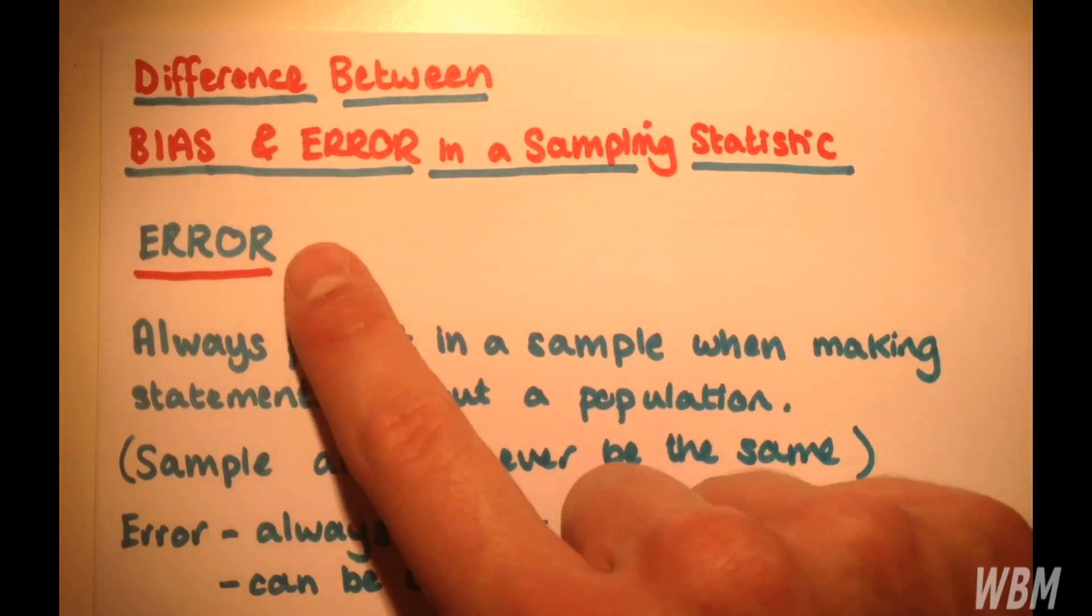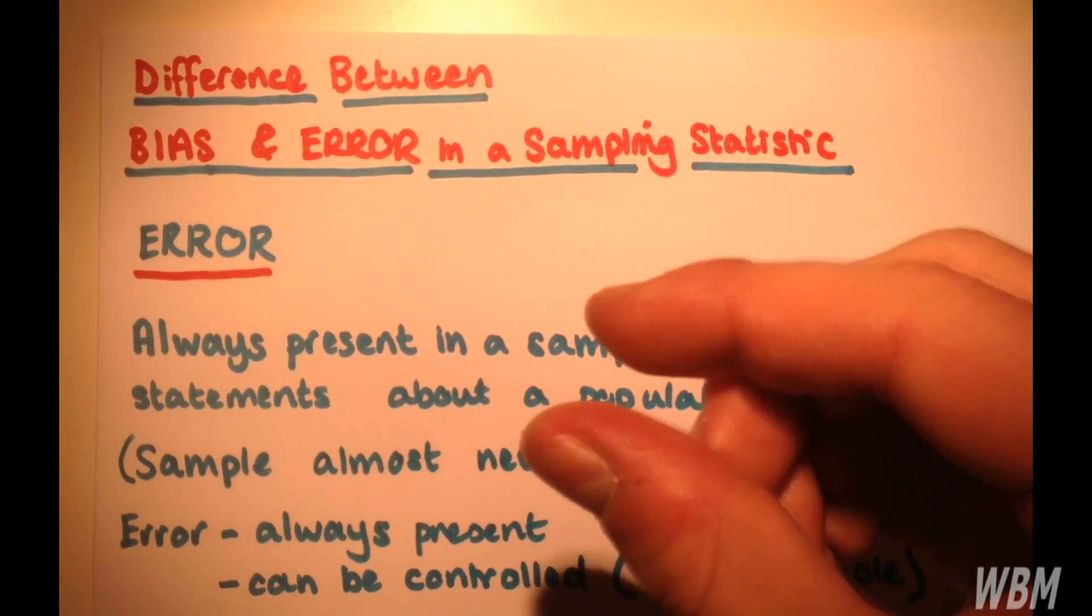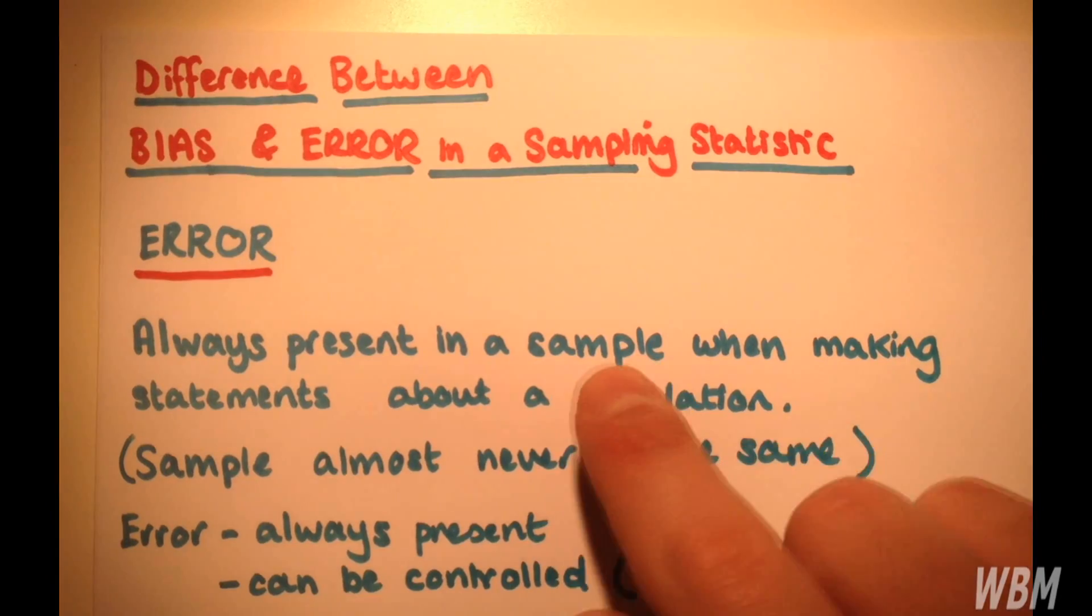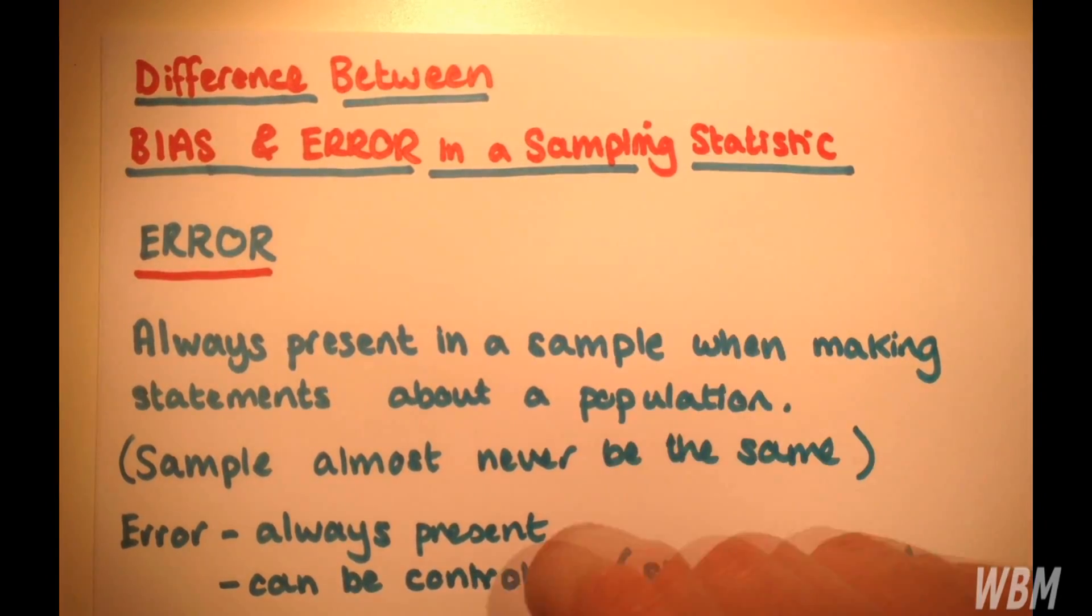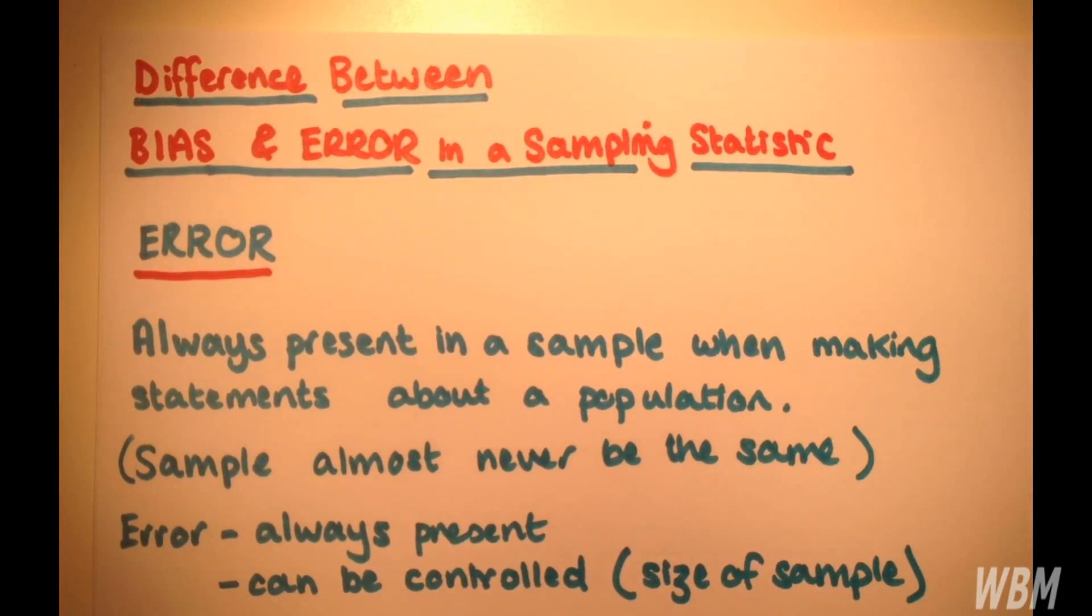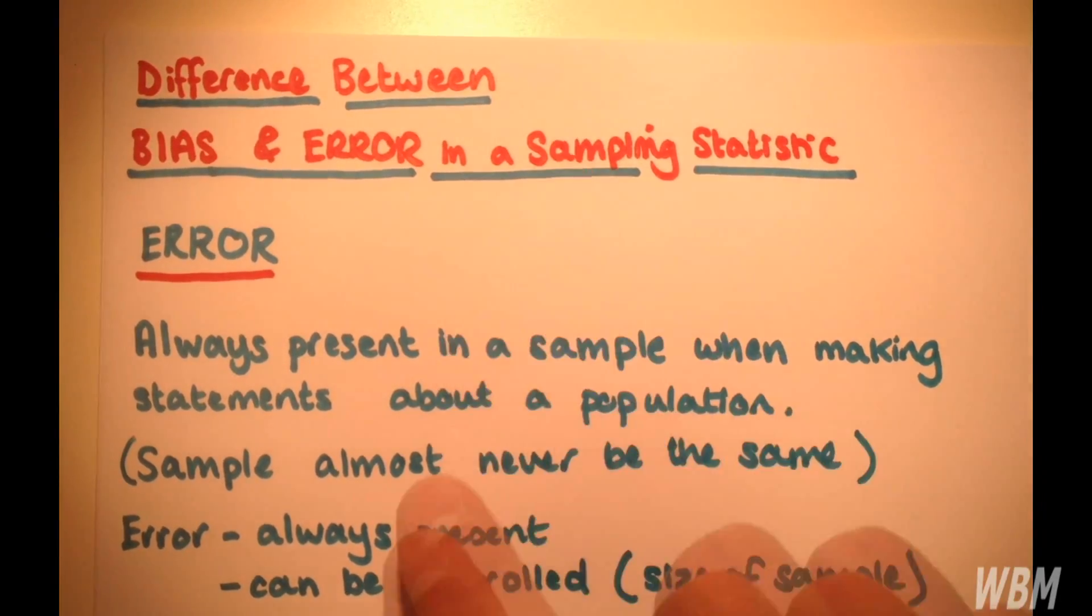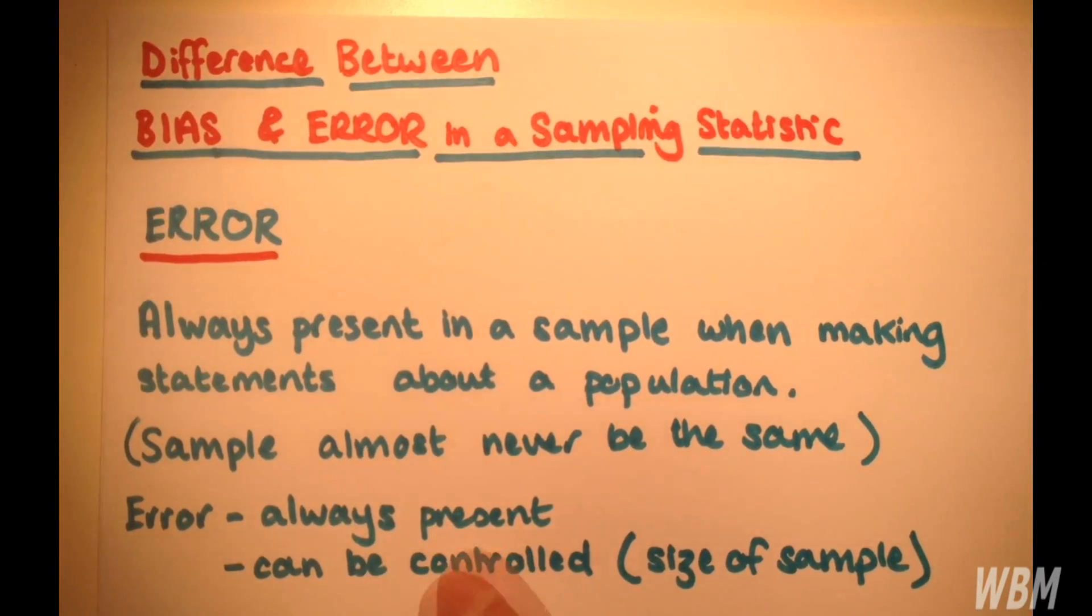So because of this error, which is sort of the distance by which your statistics aren't the same as the actual statistics in the population, your error will always be present.